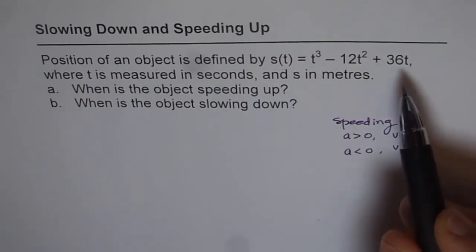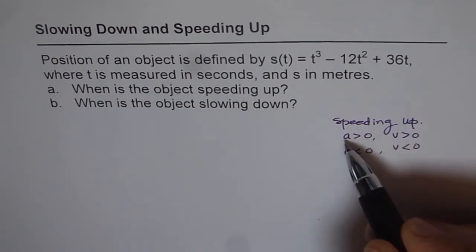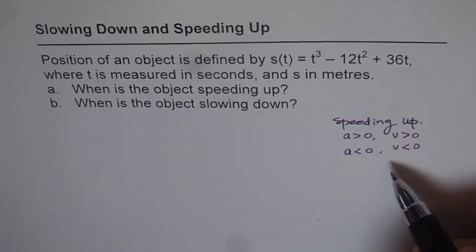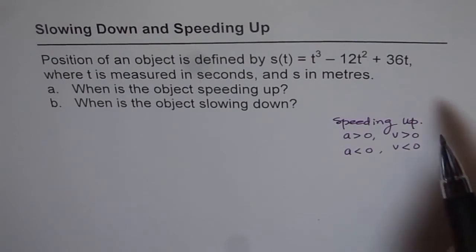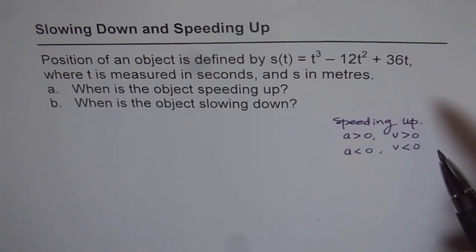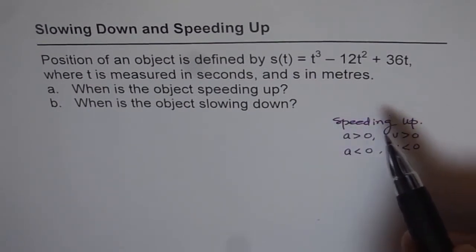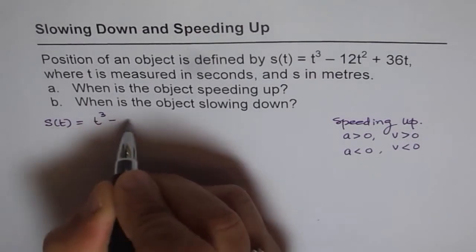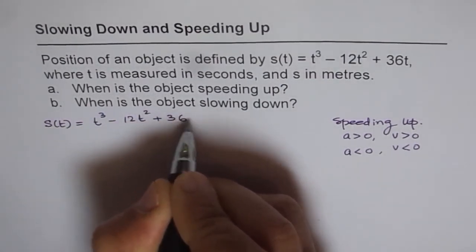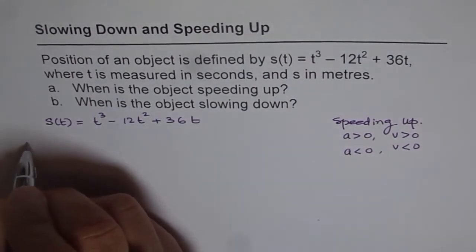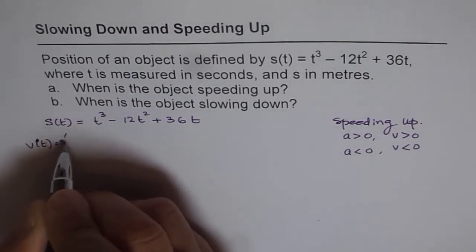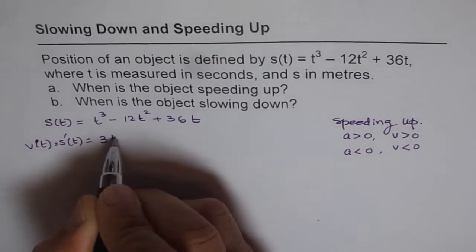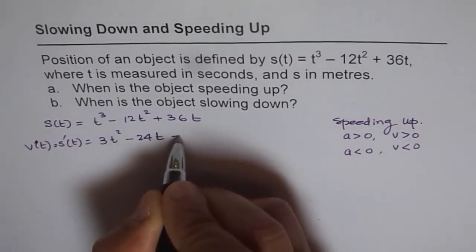We are given a position function. We need to find its first and second derivatives to know what velocity and acceleration are, and then we can determine during which intervals the object is speeding up or slowing down. So we have s(t) = t³ - 12t² + 36t. Velocity is the first derivative of position, which gives us 3t² - 24t + 36.